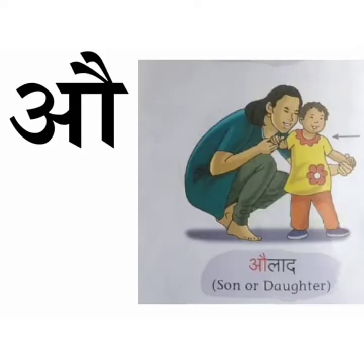AU se AUlaad means son or daughter. Children, you are the son or daughter of your parents. If you are a boy, then you are the son of your parents. And if you are a girl, you are the daughter of your parents.